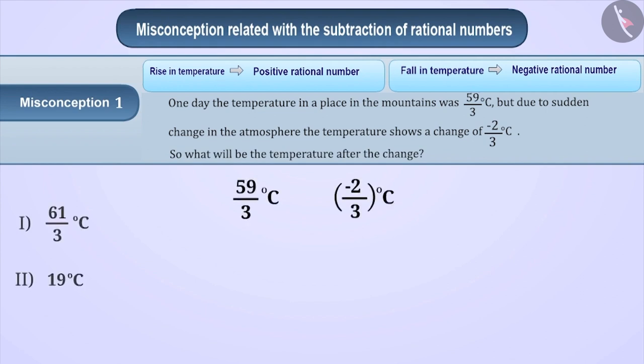In the context of rational numbers, children often have difficulty in understanding the question. For example, to solve this question, children are not able to decide whether they have to add 59 by 3 and minus 2 by 3 or subtract. In order to get the answer, some children subtract both these rational numbers and get the result as 61 by 3, which is wrong.